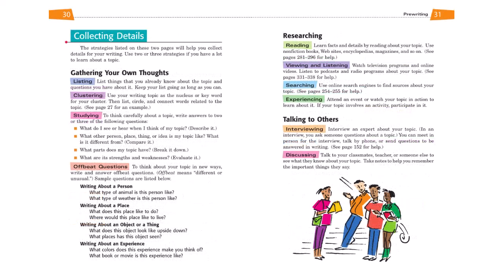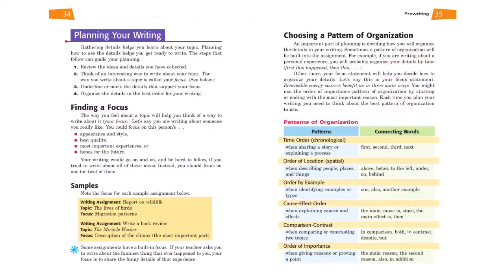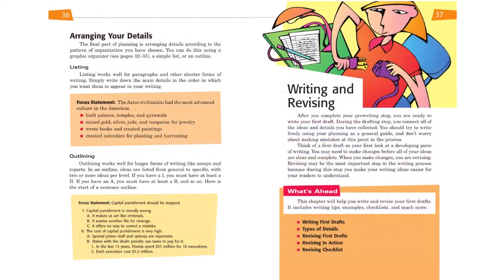Once they have a topic, students learn different strategies for gathering details about it, conducting research, and interviewing others. They learn about all sorts of different graphic organizers that they can use to get their ideas in order. They learn about planning, finding a focus, and choosing a pattern of organization. And they learn strategies for arranging their details, listing, and outlining.